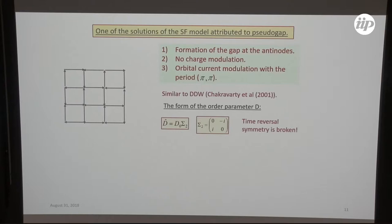Let me dwell on this one of the solutions of this Fermi model, this new solution. It was formation of gap at the anti-nodes, no charge modulation, but orbital current modulation. This modulation could be obtained in mean field approximation. And actually this structure is similar to so-called DDW state with the other parameter, which in this notation is just sigma 2. It is imaginary and therefore it is loop current.